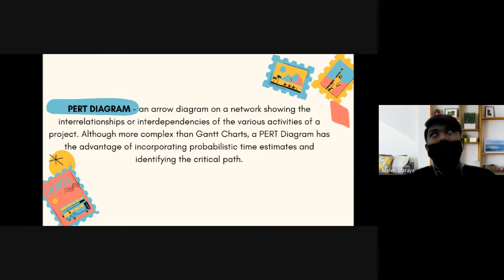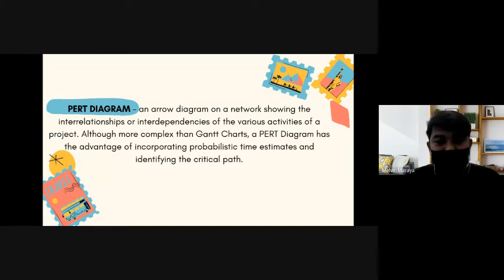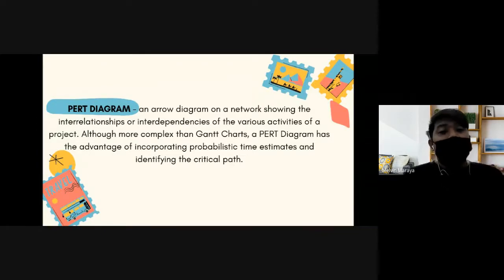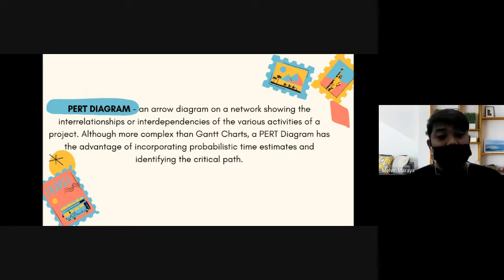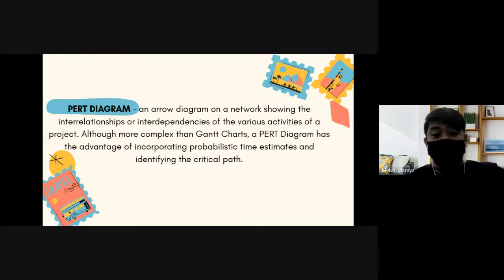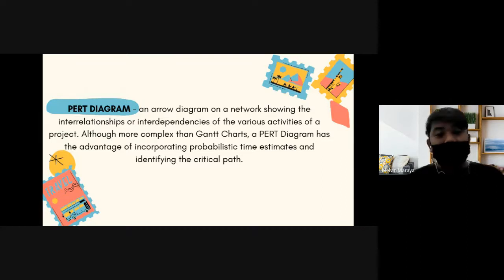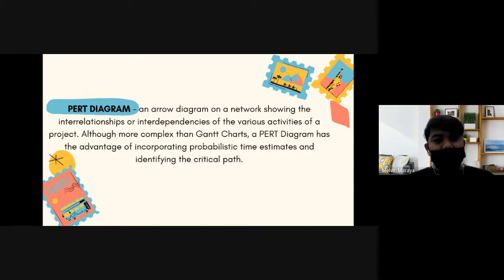There are arrows that separate, but their destination will be the same — that is why it is called a network. It shows the interrelationship, connections, or interdependencies — the dependence of one activity on another — of the various activities of a project. Although a Gantt chart is similar to PERT, PERT is more complex than the Gantt chart.